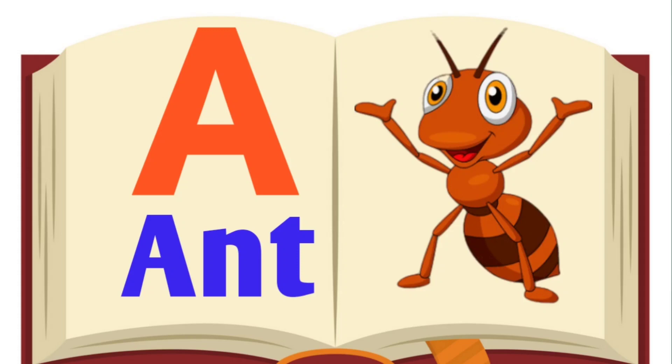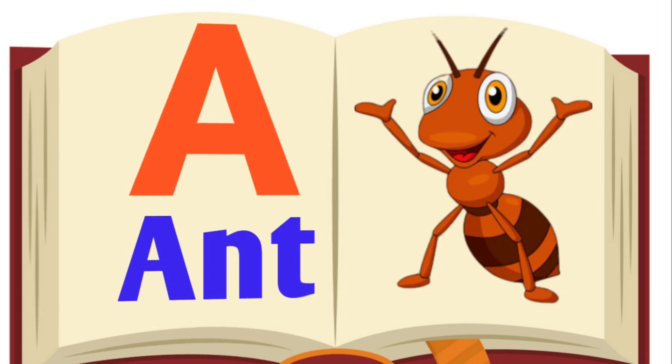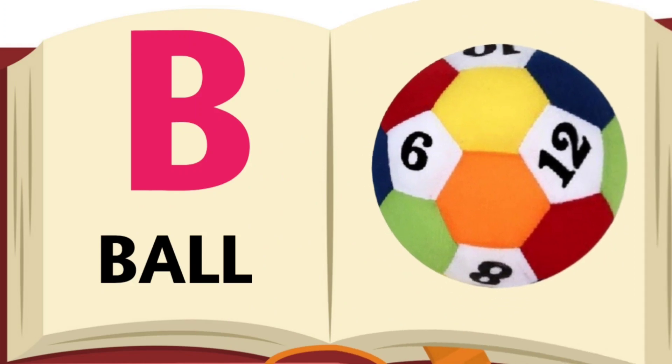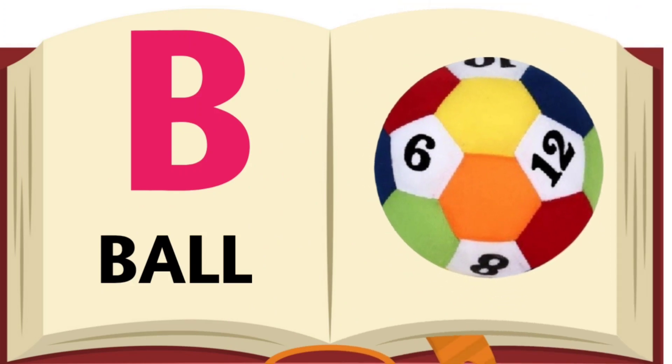A for Aunt, Aunt means Chitty. B for Ball, Ball means Genda.